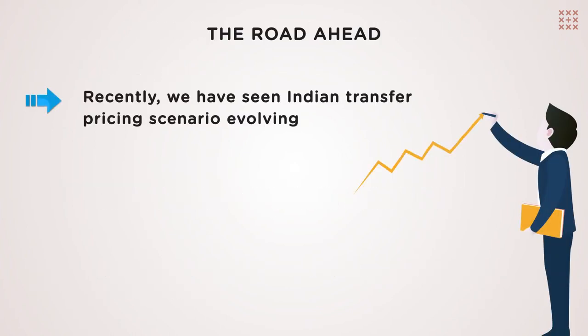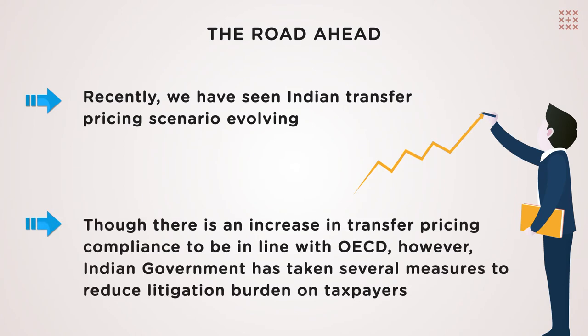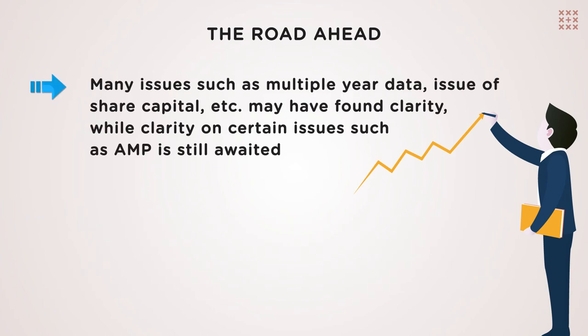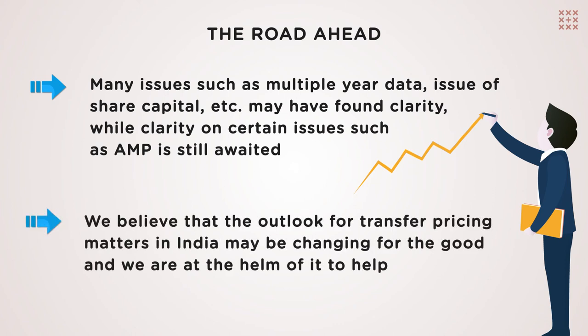In recent times, we have seen the Indian transfer pricing scenario evolving. Though there is an increase in transfer pricing compliance to be in line with the OECD, the Indian government has taken several measures to reduce litigation burden on the taxpayers. Many issues such as multiple year data and issue of share capital may have found clarity, while clarity on certain issues such as AMP is still awaited. We believe that the outlook for transfer pricing matters in India may be changing for the good and we are at the helm of it to help.